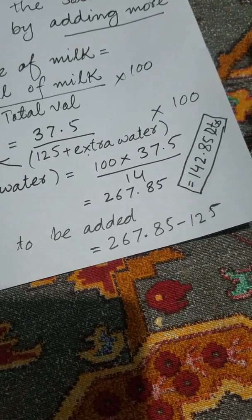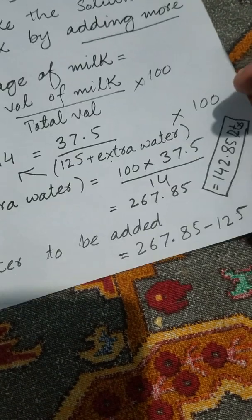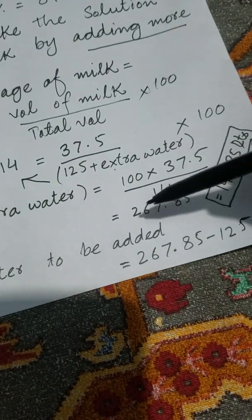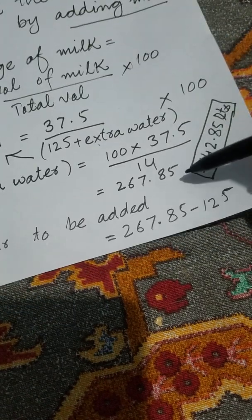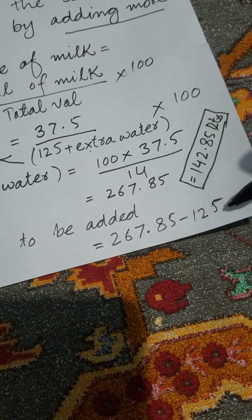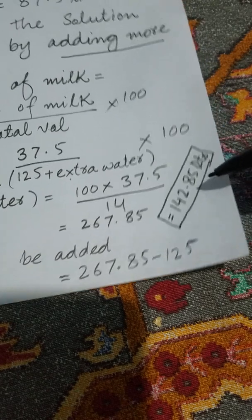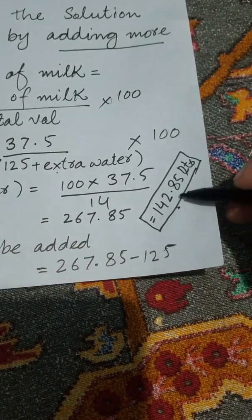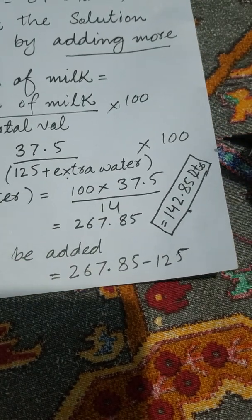So the extra water we need is equal to 267.85 minus 125, which is equal to 142.85. Thank you.